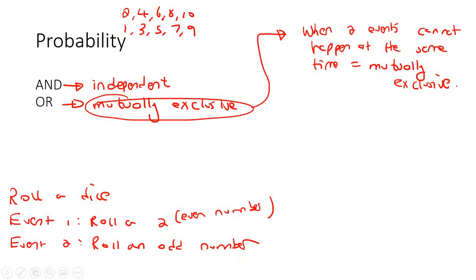Mutually exclusive is two events that cannot take place at the same time. For example, if you walk into a school and you say, I want everyone who does both maths and maths literacy to stand up — no one is going to stand up. Because some people do maths and some people do maths literacy. There's not going to be a person that does both. Those are called mutually exclusive. They cannot happen at the same time. You cannot do maths and maths literacy at the same time.